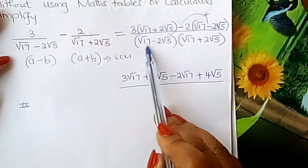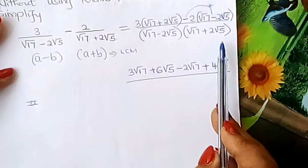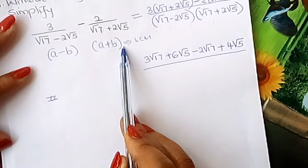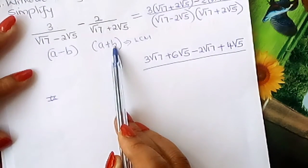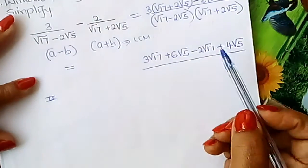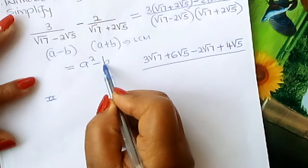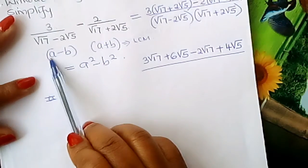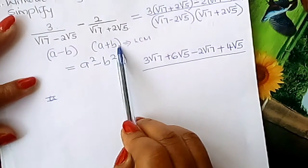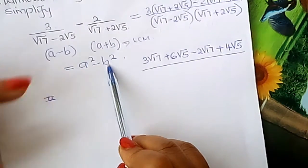For the denominator, you have a minus b times a plus b. These are of that kind — a minus b multiplied by a plus b gives you a squared minus b squared. That is the algebraic identity: a minus b times a plus b equals a squared minus b squared.